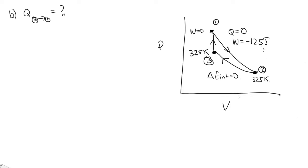So let's look at the change in internal energy going from 1 to 2, that's just equal to Q plus W from 1 to 2. So that's 0 minus 125. So that's minus 125 joules. So the change in internal energy is equal to minus 125 joules.